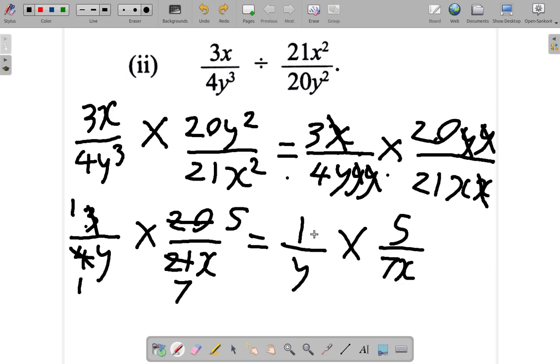I don't see anything more to cancel. So I'll just multiply the two tops. 5 times 1 is 5, over, multiplied by the two bottoms. Y multiplied by 7x is 7xy. So this is our answer: 5 over 7xy.